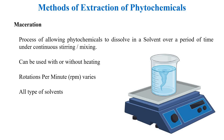After the maceration incubation is over, the liquid is filtered through a strainer. The filtered liquid is then allowed to evaporate. Since alcohols and organic solvents have a low boiling point, they easily evaporate at room temperature, leaving all the phytochemicals deposited at the bottom as a thick gooey substance. This is called the crude extract.